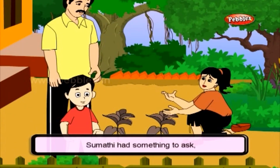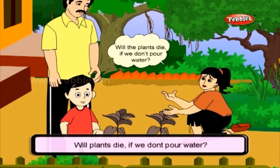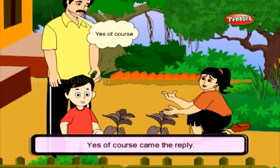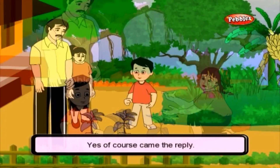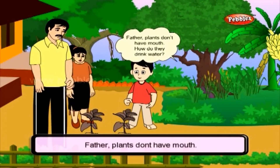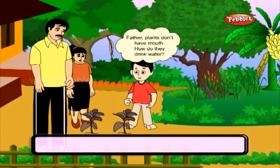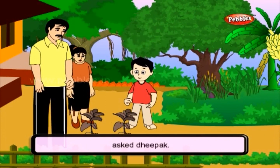Sumati had something to ask: 'Will plants die if we don't pour water?' 'Yes, of course,' came the reply. Deepak then asked, 'Father, plants don't have a mouth. How do they drink water?'